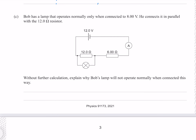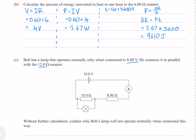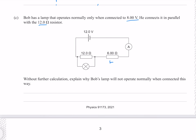Question C. Bob has a lamp that operates normally only when it is connected to 8 volts. He connects it in parallel with the 12 ohm resistor. Without further calculation, explain why Bob's lamp will not operate normally when connected this way. From above, we determined that our 6 ohm resistor is consuming 4 volts, and since voltages in our circuit add, we must have 8 volts across this resistor.